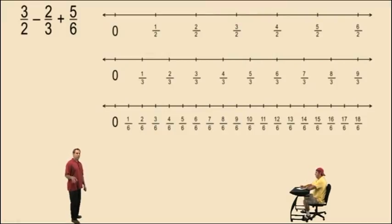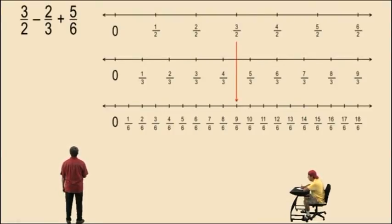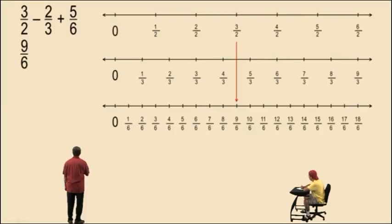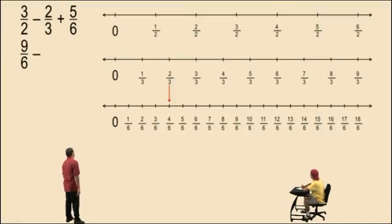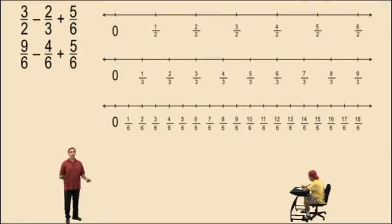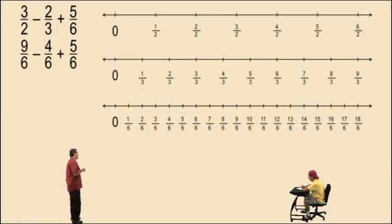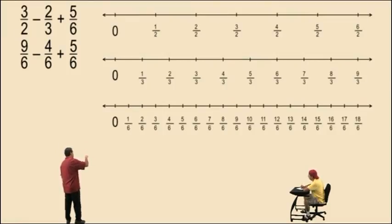Don't get scared. Remember, in this video we are going to use number lines to visually show our calculations. Here we have 3 halves. Notice, 3 halves is equivalent to the fraction 9 sixths. And so let's write 3 halves as 9 sixths. Now let's go over to the 2 thirds. 2 thirds is equivalent to the fraction 4 sixths. And 5 sixths has the denominator of 6. You're going to hear me saying in future videos that 6 is called the lowest common denominator — again, we'll talk about that later in the semester. But we saw how 2 thirds is equivalent to 4 sixths because it's in the same location on the number line, and 3 halves is in the same location as 9 sixths on these number lines.